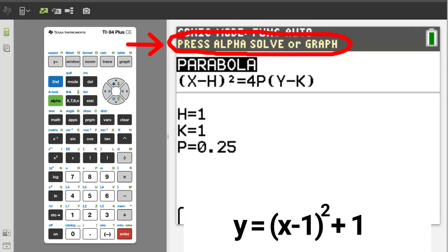Here it says press alpha solve or graph. Alpha solve will give us the vertex, focus, and directrix. So press the green alpha button and the solve button is down here. The enter button.